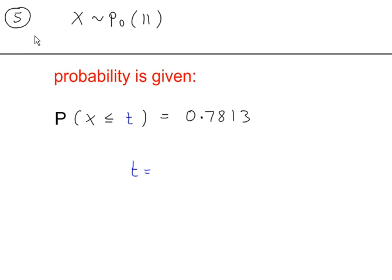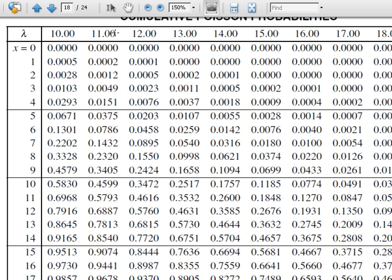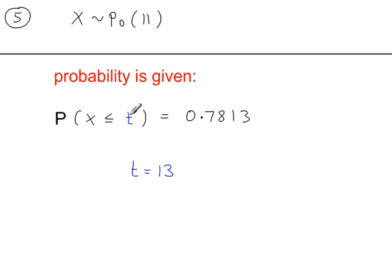Example 5. The value of lambda is given and the probability is given; we need to calculate the value of t. Since we have a less-than-or-equal-to probability, we go to the tables for lambda = 11 and look up this probability. With lambda = 11, we find the probability and read off the value of x, which is 13.